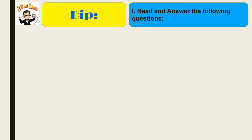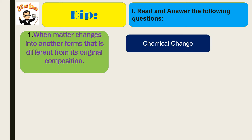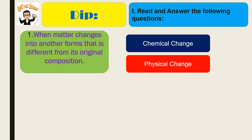Before we proceed, read and answer the following question. When matter changes into another form that is different from its original composition, which is it — chemical change or physical change? Yes, you are correct. That is chemical change.